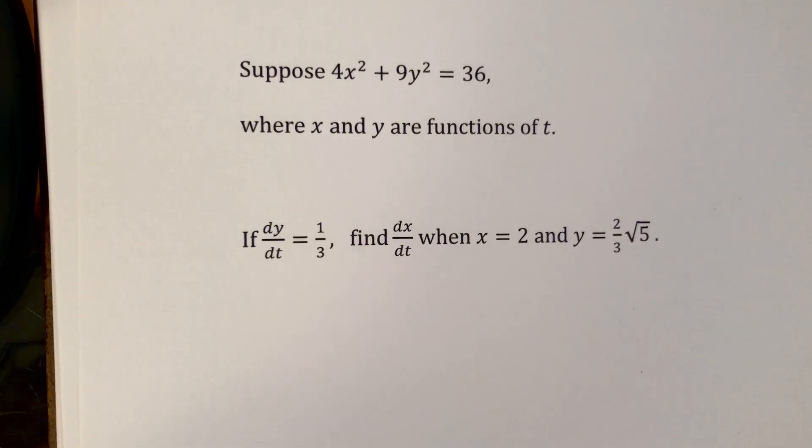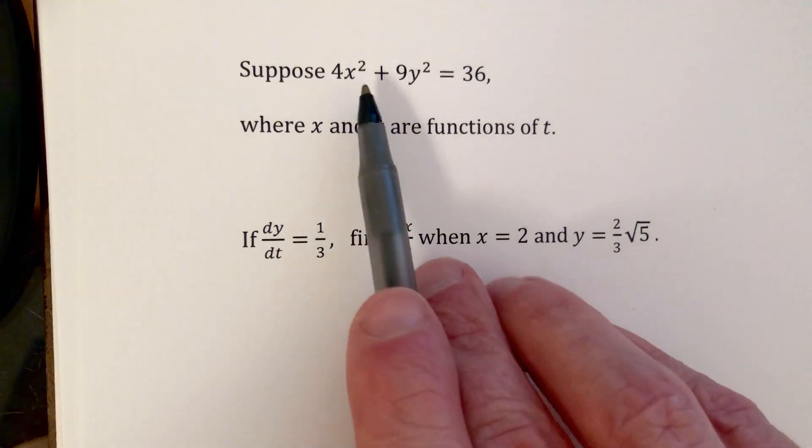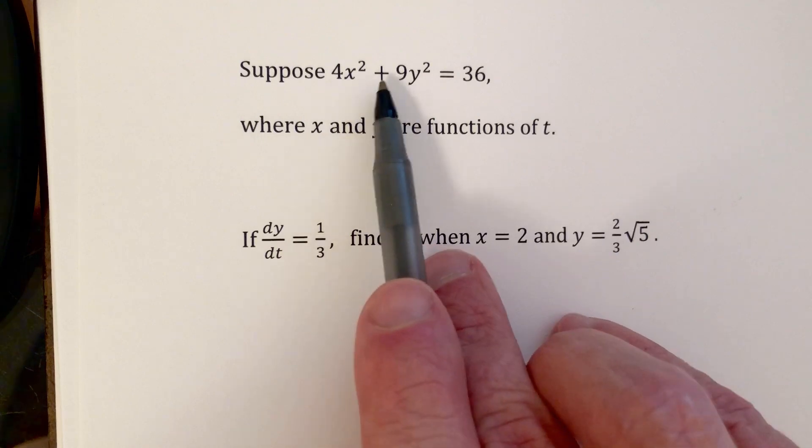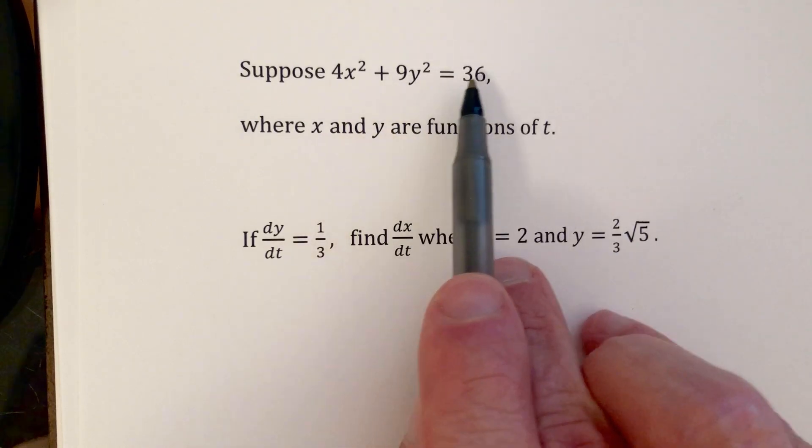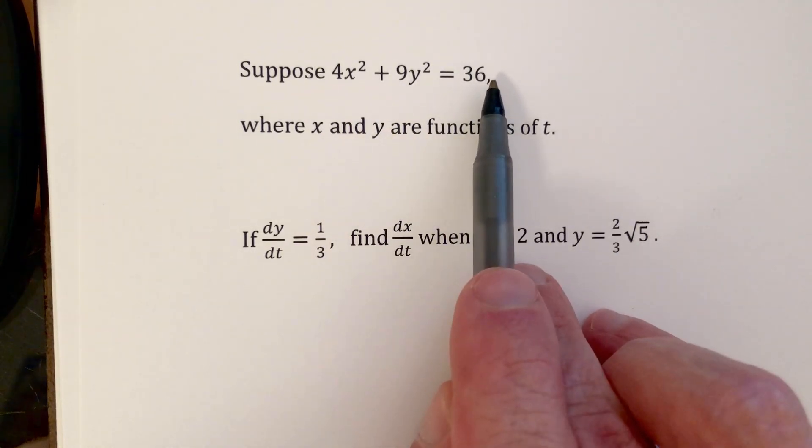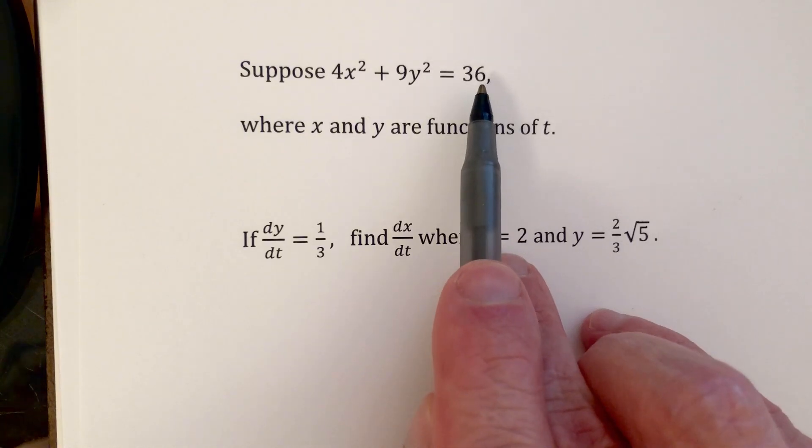This is our first example involving related rates. We have the equation 4x squared plus 9y squared equals 36. As you all know, this is an ellipse.